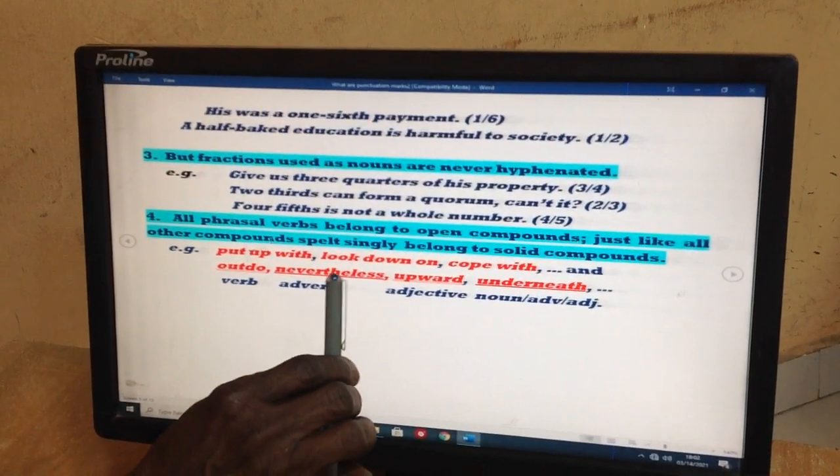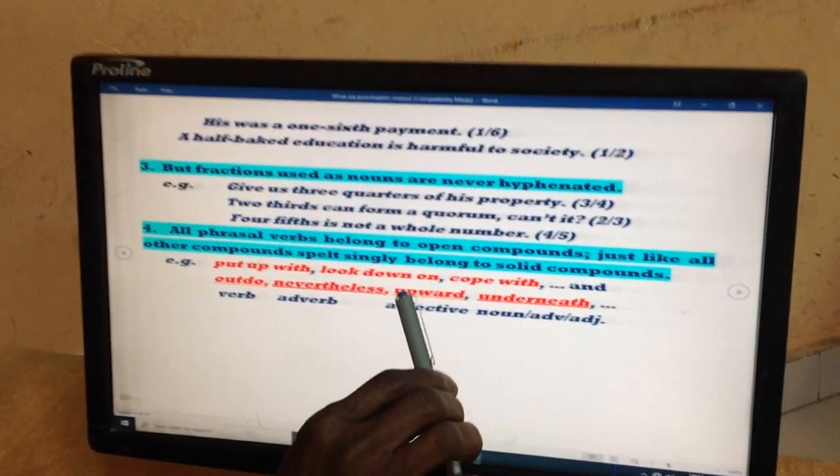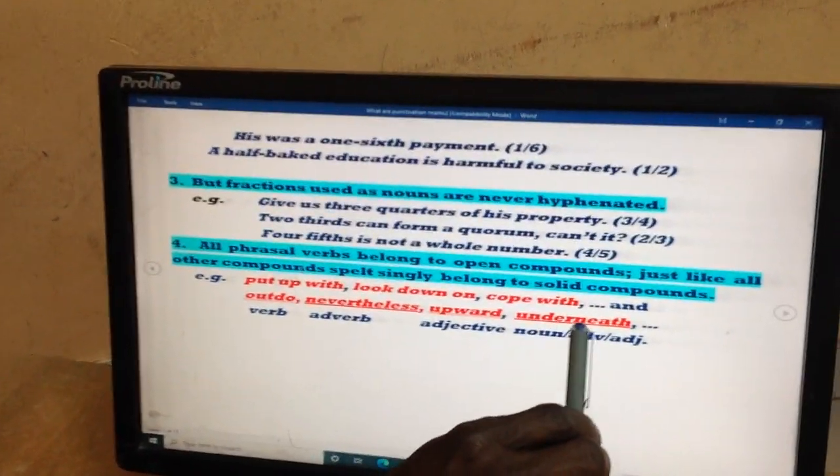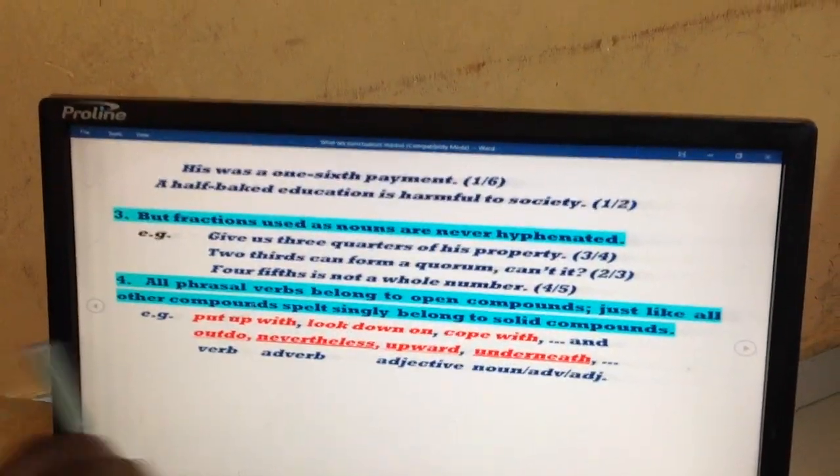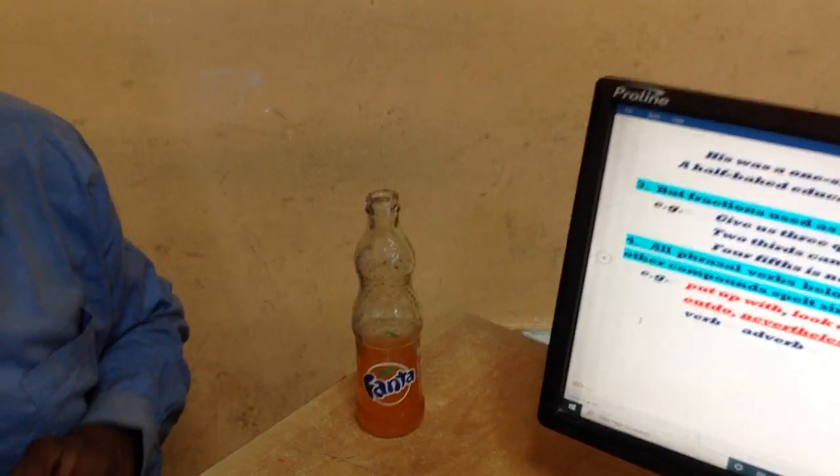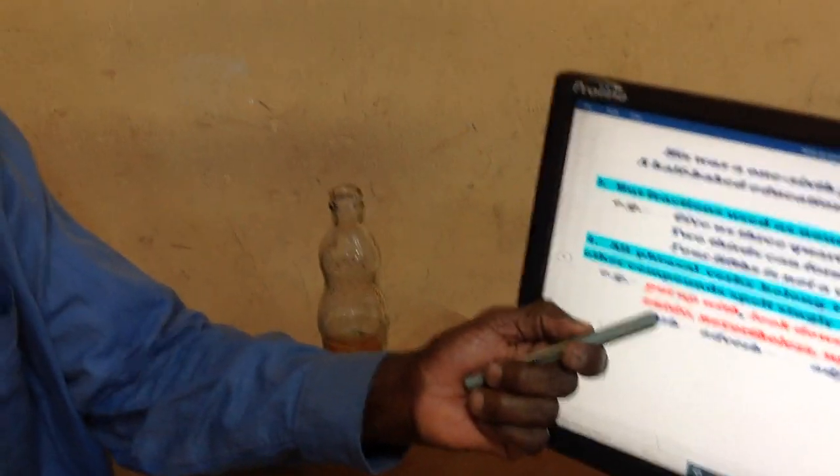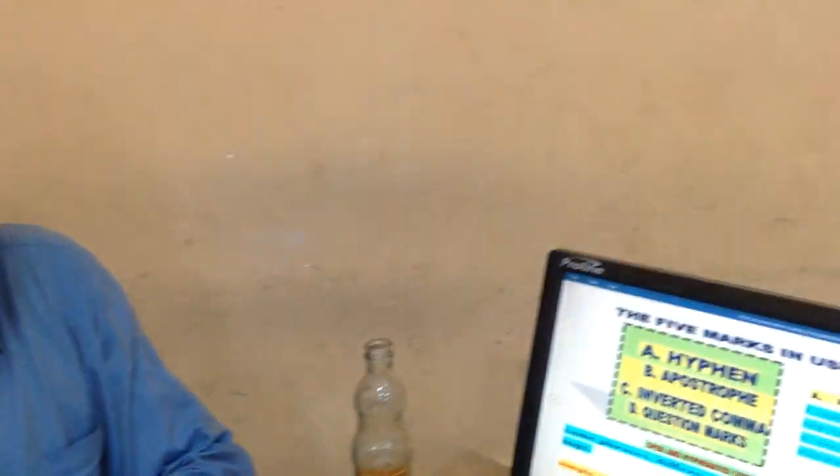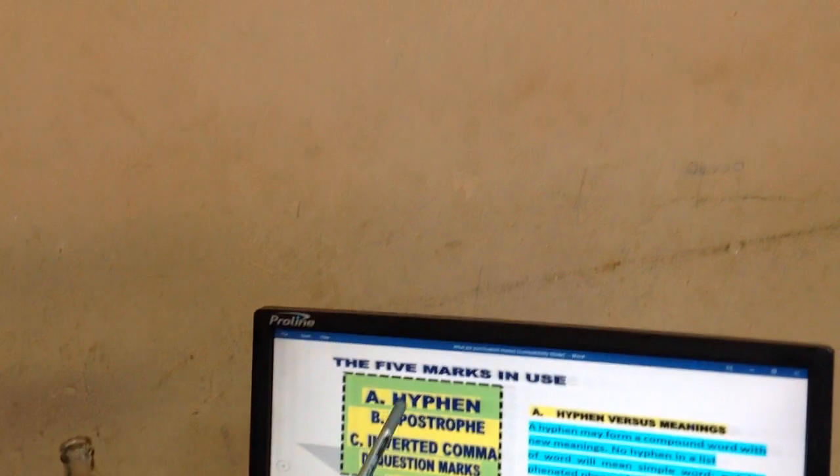Never is a word. There is a word. Nevertheless. Upward. Towards. Underneath. Those two are what we call solid compound because they are always spelled as one word, even though they comprise more than one word in their spelling. So we are through, I suppose, not yet. Now, the practical exercises on hyphens.